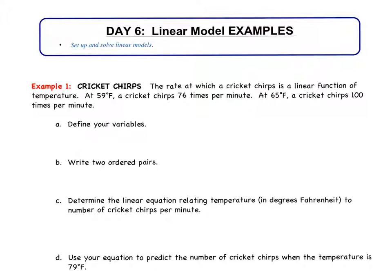So if we look at example number one, it's cricket chirps. The rate at which a cricket chirps is a linear function of temperature. At 59 degrees Fahrenheit, a cricket chirps 76 times per minute. At 65 degrees Fahrenheit, a cricket chirps 100 times per minute.